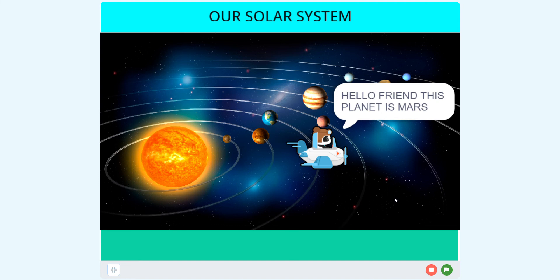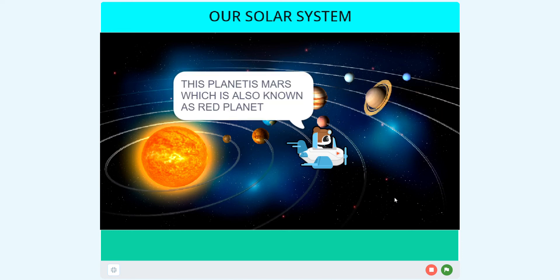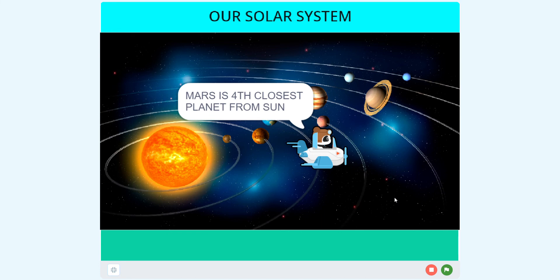Mars. This planet Mars which is also known as Red Planet. Mars is the fourth closest planet from the Sun. Mars has two very small moons called Phobos and Deimos. They are shaped like potatoes.